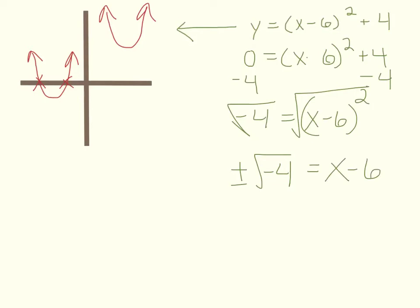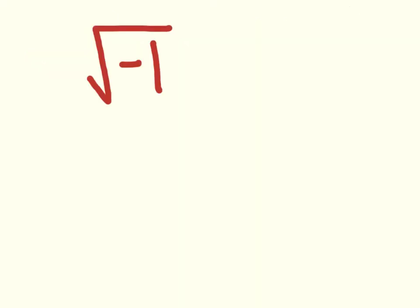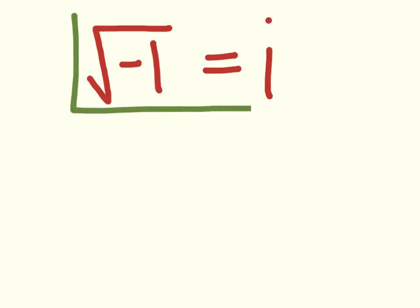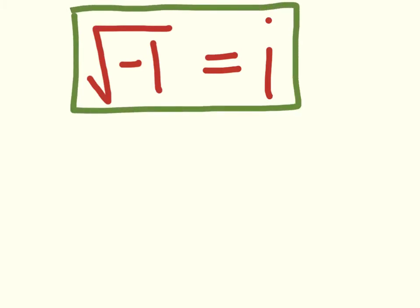You would say, well, I can't take the square root of a negative number. But you actually can — you just have what we call an imaginary result. So from now on, whenever you're trying to take the square root of a negative number, keep in mind: the square root of negative 1 equals i. And i is for imaginary. So if you learn anything at all today, that's what you're going to learn: the square root of negative 1 equals i.